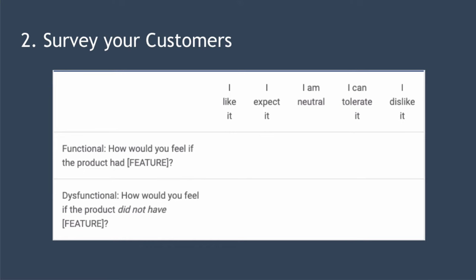Step two is to ask your customers how they feel about each feature in a standardized way using two questions. The first question is asked in a positive way — called the functional way — meaning you ask your customer how they would feel if the product had that feature. The second question is asked in a negative way — called the dysfunctional way — meaning you ask the customer how they would feel if the product did not have this feature. You can see those two questions on the image here, and your customer can answer each question using one of five possible responses.